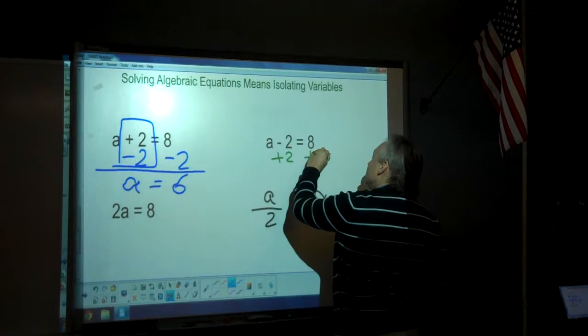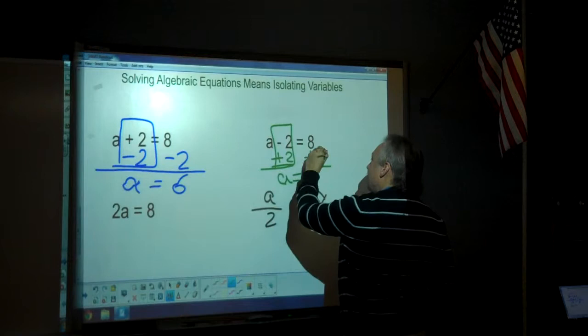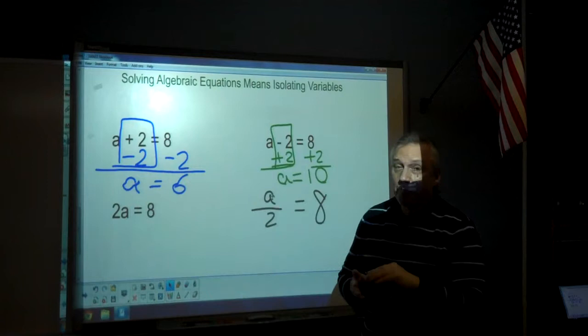So in this case, you would add 2 to each side. Again, this cancels just an a on this side. 8 plus 2 equals 10.